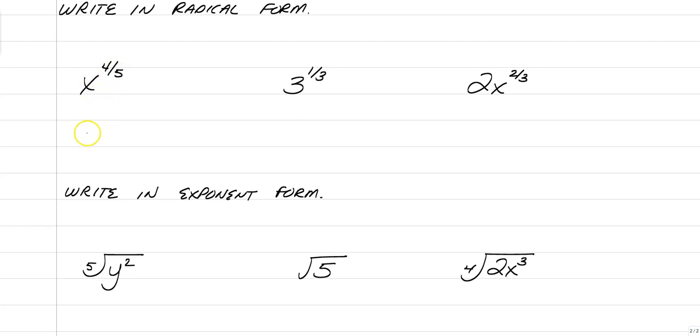So, x to the 4 fifths, you should have as the fifth root of x to the fourth power. 3 to the 1 third would be the cubed root of 3 to the first power. No, you don't have to write the 1, that's optional.